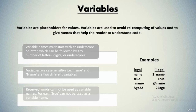Now there are certain rules associated while creating a variable. Firstly, variable names must start with an underscore or a letter, which can be followed by any number of letters, digits or underscores. Variables are case sensitive — both 'name' and 'Name' are two different variables because we have a small 'n' in one and a capital 'N' in the other.